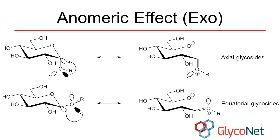There is also a second type of anomeric effect, known as the exoanomeric effect, that influences the conformations of glycosides. The exoanomeric effect arises from the donation of a glycosidic-oxygen lone pair into the C-O antibonding orbital formed by the ring oxygen and carbon-1. This backbonding influences the conformations of both axial glycosides and equatorial glycosides.